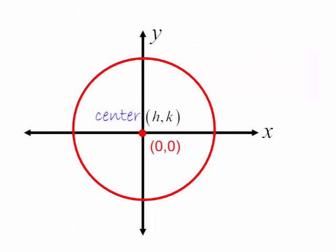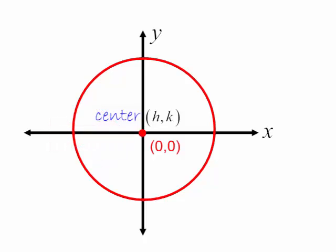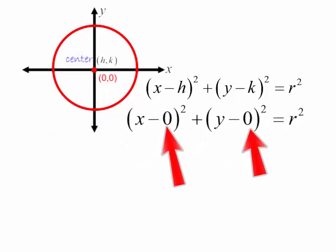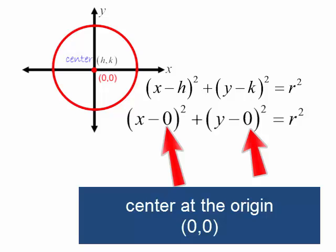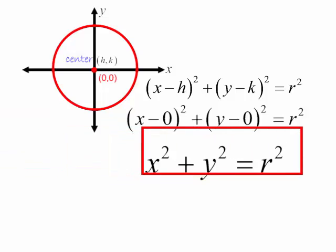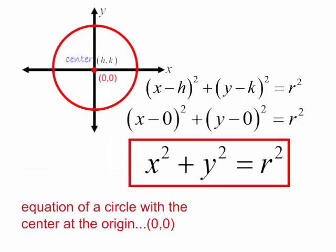Now what if my center, my (h, k), is at the origin — at (0, 0)? Here is the equation of a circle with the center at (h, k). If the center of my circle is at the origin, (0, 0), I will replace h and k with 0 and simplify. I will get x squared plus y squared is equal to r squared. This is the equation of a circle with the center at the origin, (0, 0), and a radius of r.